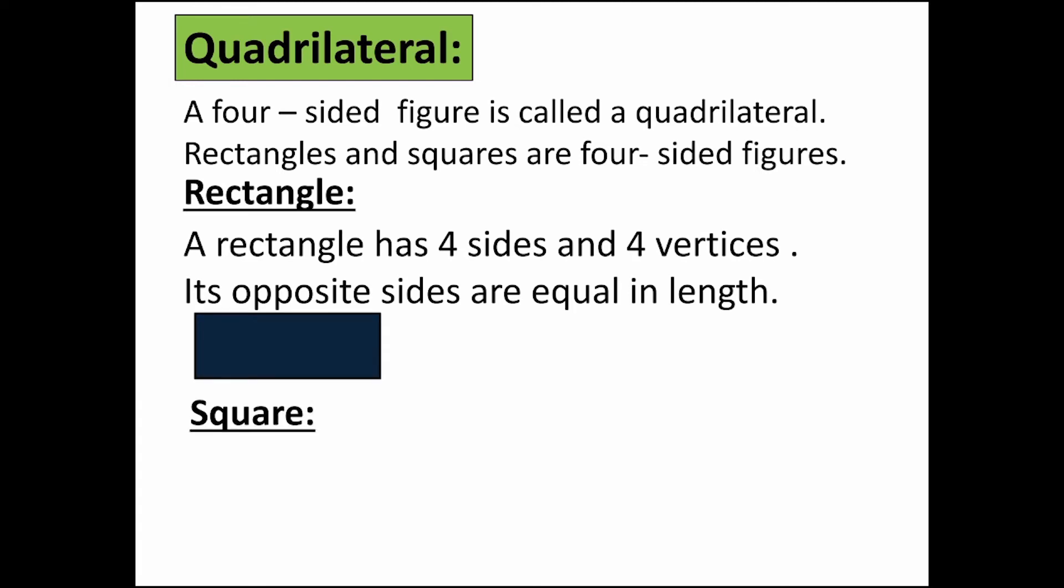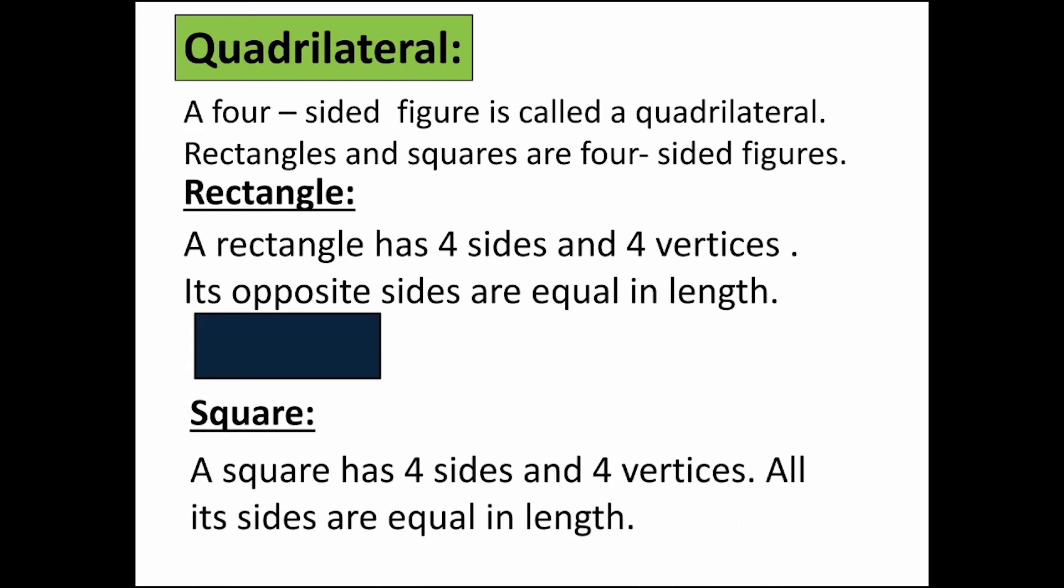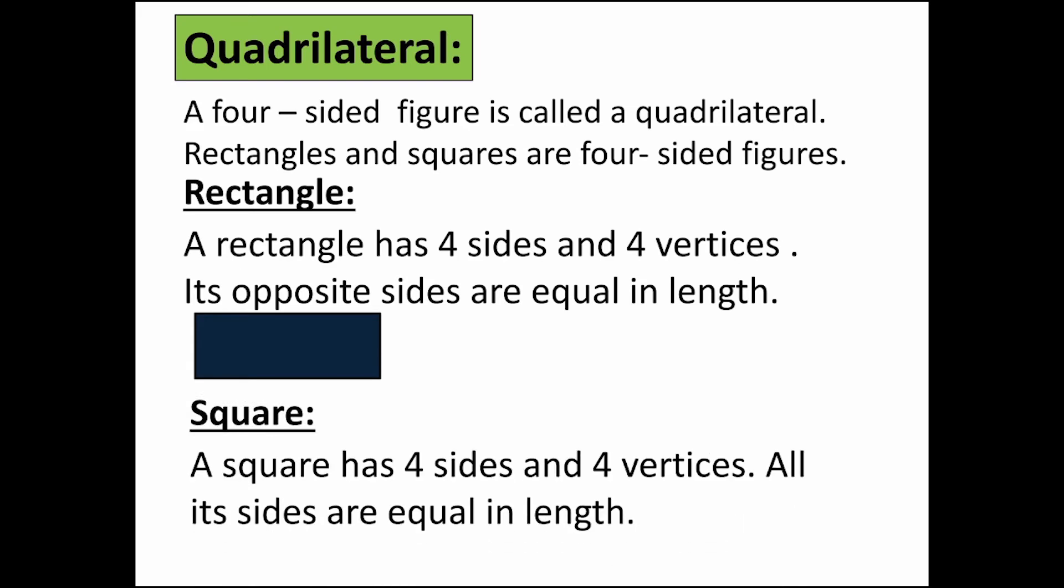What is the square? A square has 4 sides and 4 vertices. All its sides are equal.